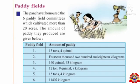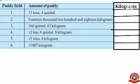See the first activity: Paddy Fields. The panchayat owner had six paddy field committees which cultivated more than 20 acres. The amounts of paddy they produced are given below. First, let's find out the amount of paddy in kilograms.